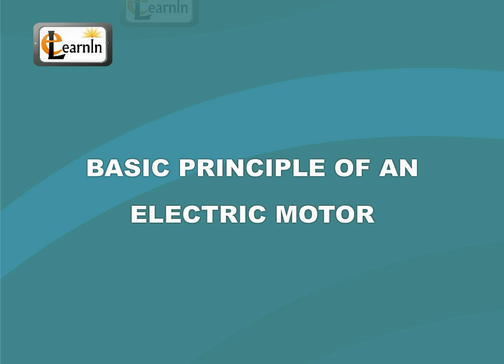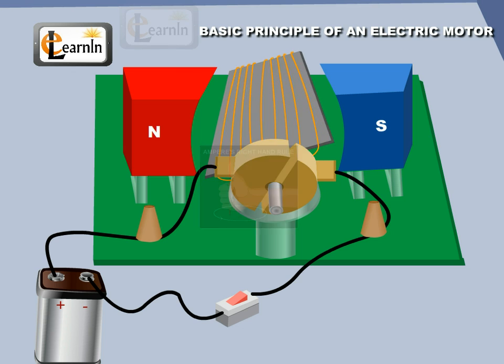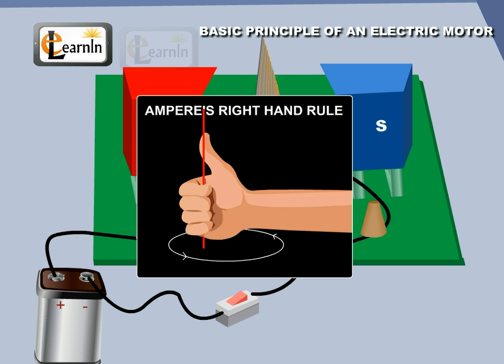Basic principles of an electric motor. The direction of the magnetic field produced by a current carrying conductor can be found by Ampere's right hand rule.